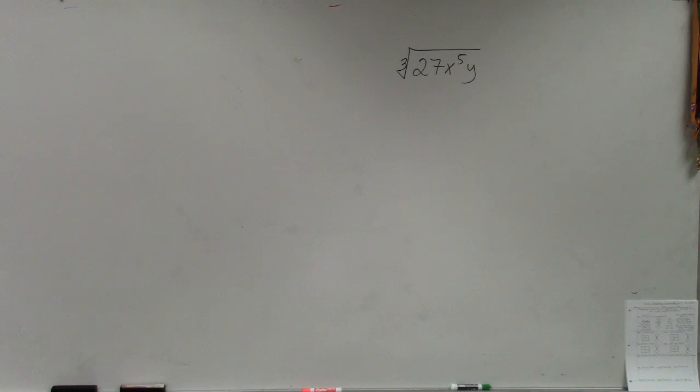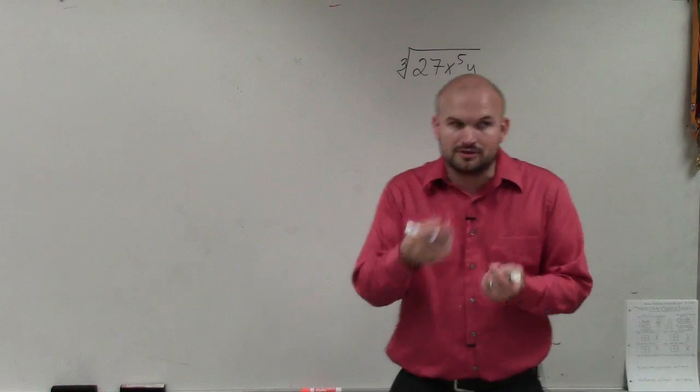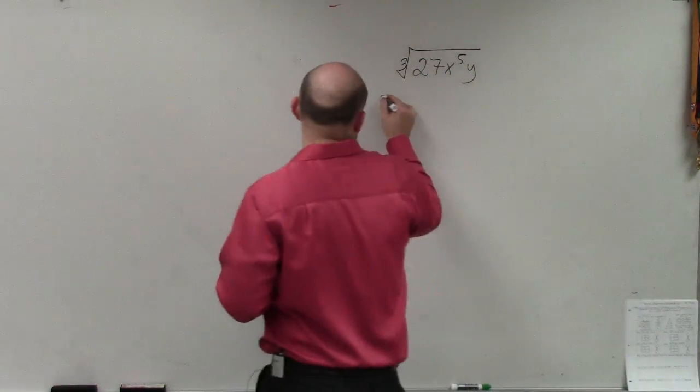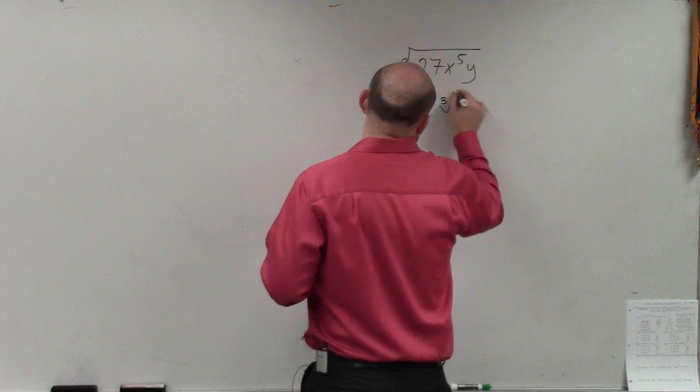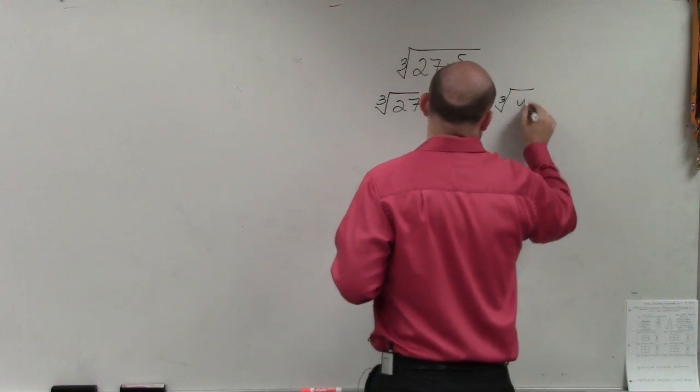So in this example, we're doing the cube root of this. Now the one thing I want you to understand, whenever you're simplifying a radical, it makes sense to break them up into the cube root of 27 times the cube root of x to the fifth times the cube root of y.